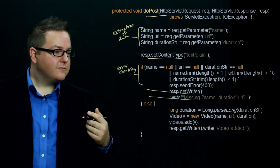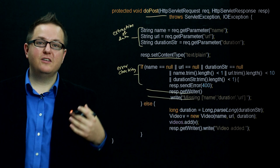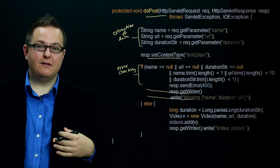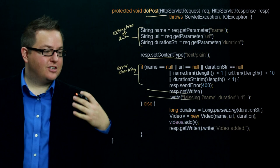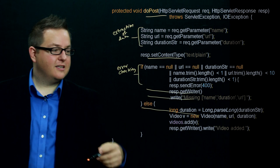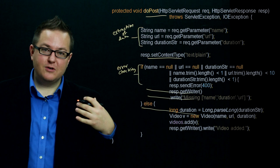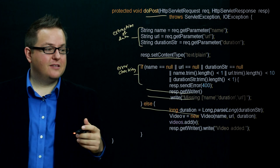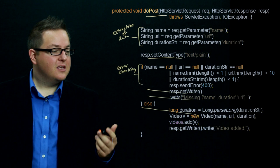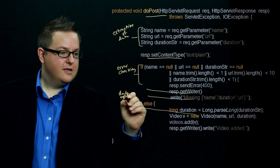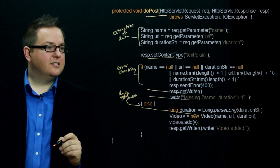Assuming we pass all the null and empty string checks, we finally start doing logic related to the video. But even then, there's still a bit more work — we have to take the duration string extracted from the HTTP request, since all parameters are sent as strings, and convert it to the native Java type, which in this case is a long. So we have to do parsing and type conversion before we can do anything else, adding more complexity on top of everything.